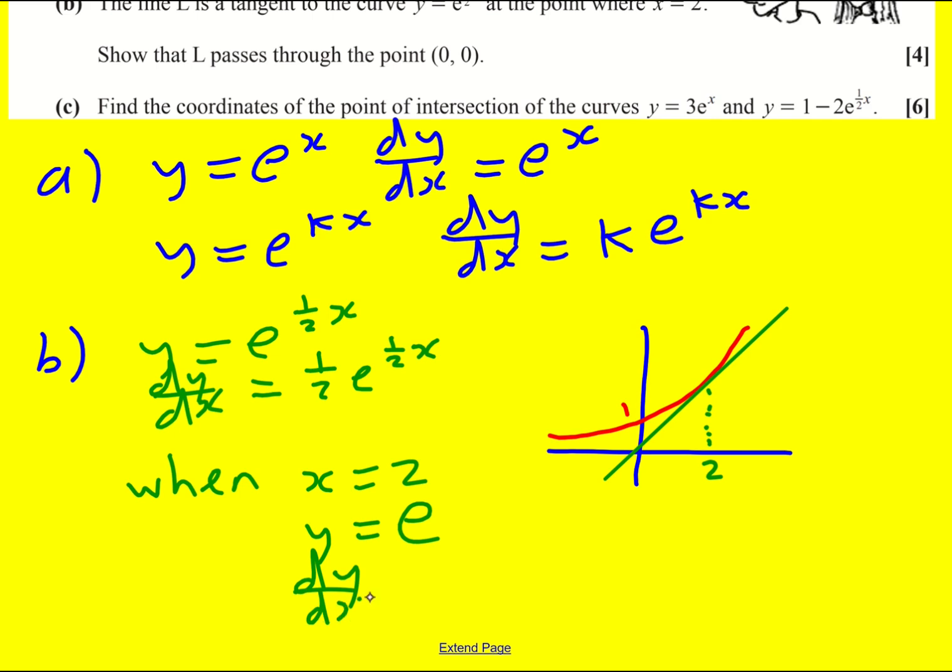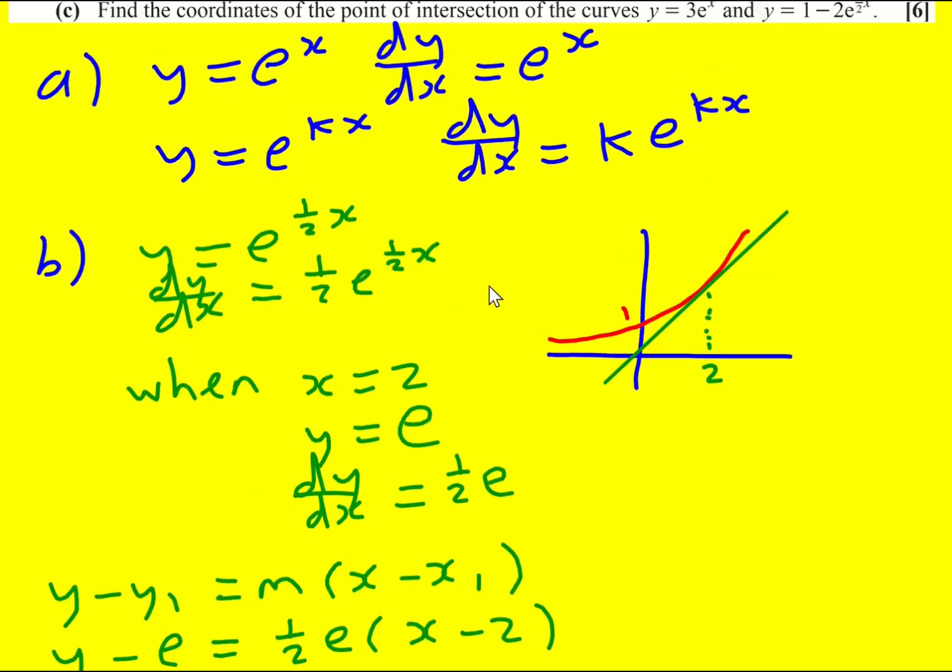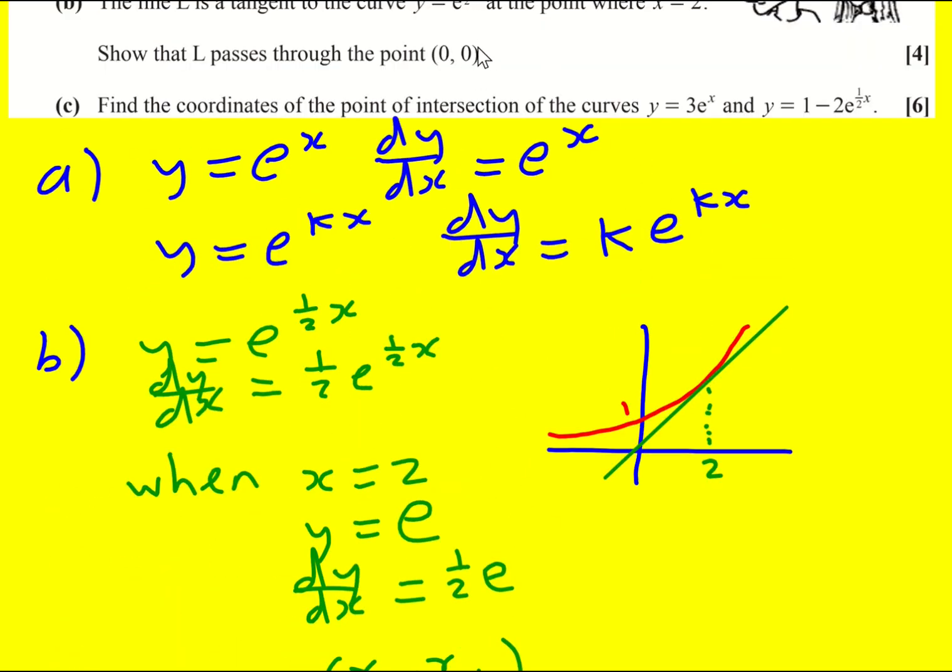And dy by dx, the gradient at the point when x equals 2, is going to be a half e, because I've just substituted it into here. Now I can use the equation of any straight line, y minus y1 equals m times x minus x1. Learn this really useful formula for when you know the gradient and a point. So y minus e equals a half e times x minus 2.